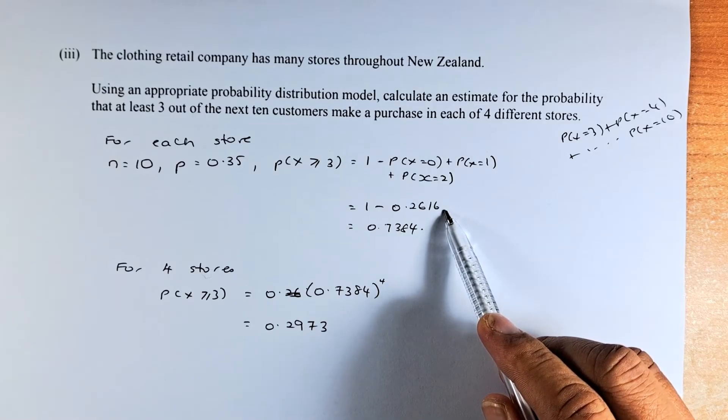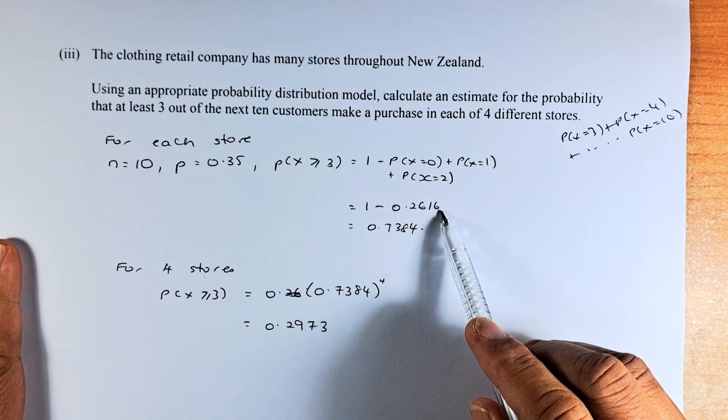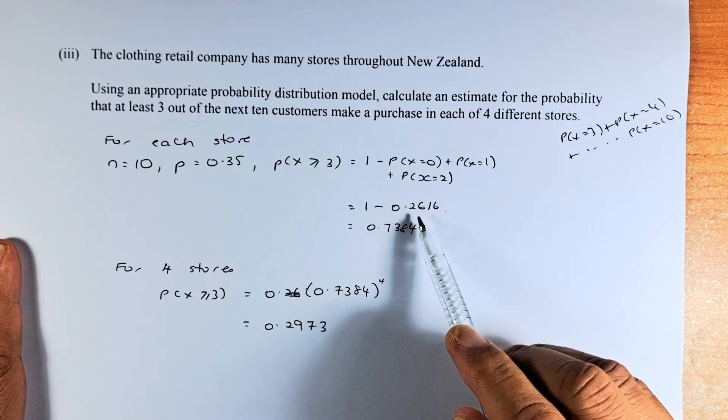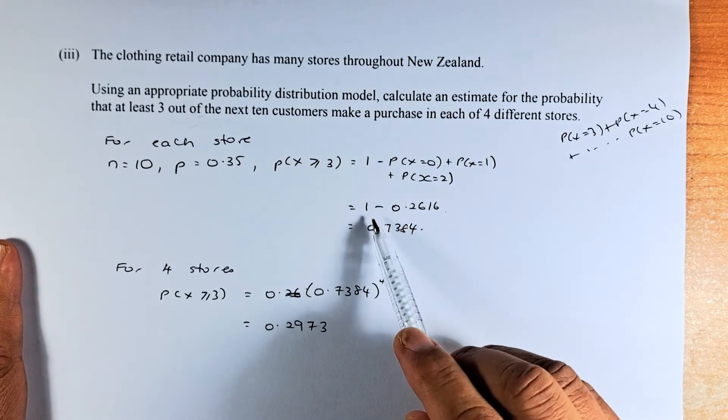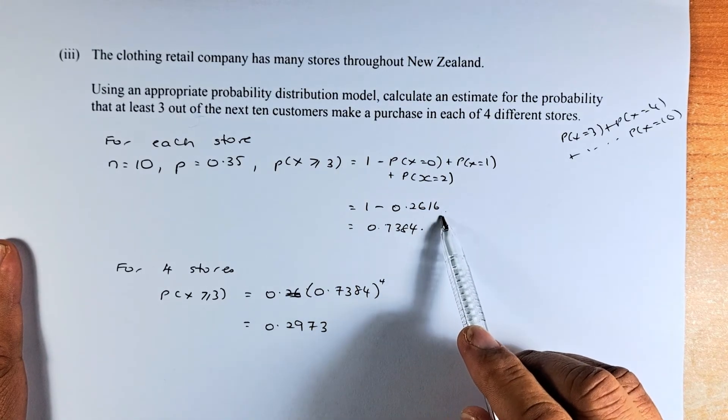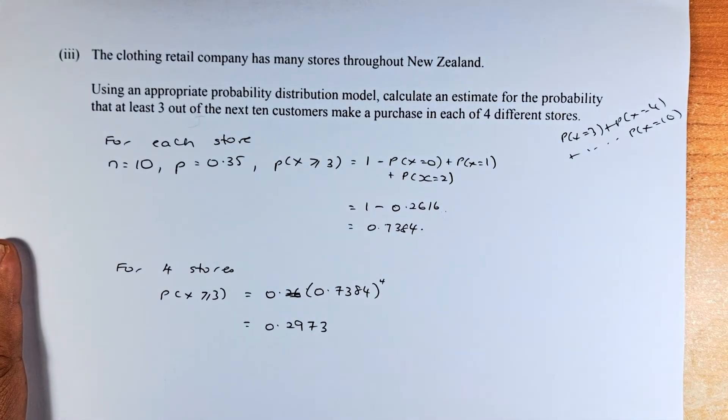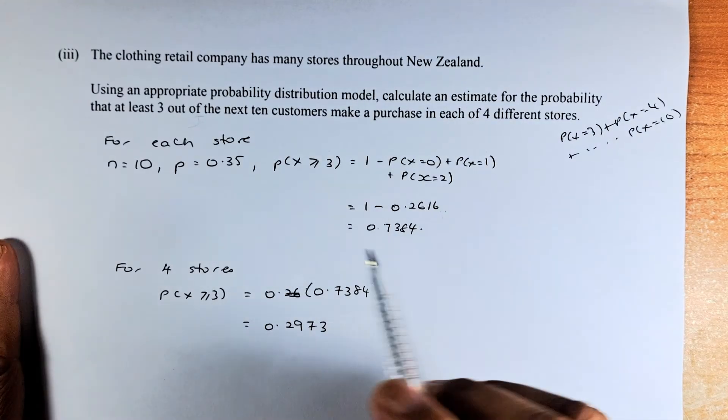So we know from the first example, part 1, the probability of less than 3 is 0.2616. So 1 minus 0.2616 is 0.7384. Because for each store, the probability is 0.7384.